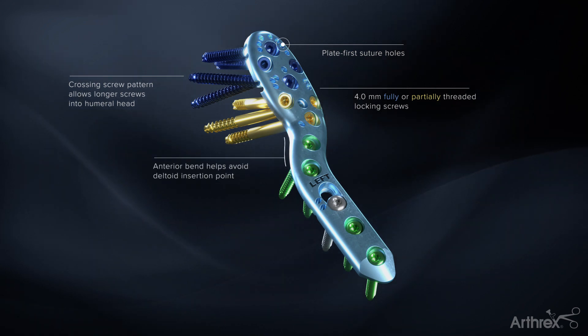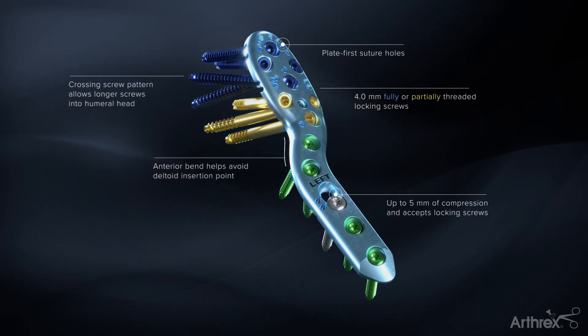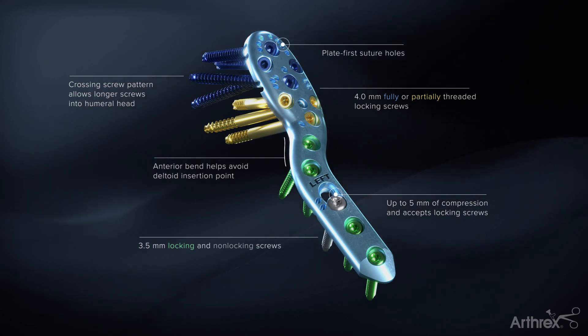The plate includes an interior bend to avoid the deltoid insertion site, an oblong hole that allows up to 5 millimeters of compression, and accepts 3.5 millimeter locking or non-locking screws in the shaft.